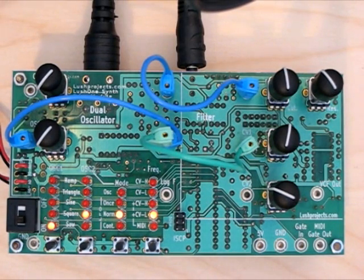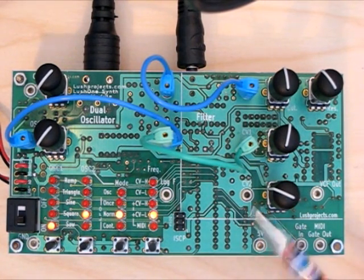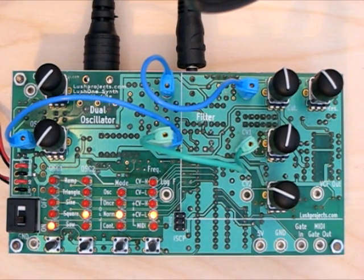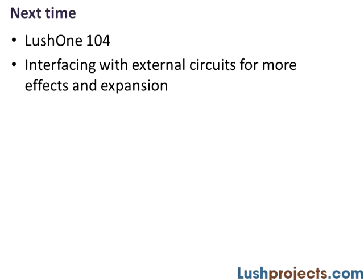We've been through all the key features of the Lush One — using the control voltage inputs and the associated gain controls to modulate the filter, using the log F output from oscillator 1 as an input to the filter to make it track the keyboard, and using the control voltage inputs to the oscillators and their associated gain controls to modulate the oscillators. You're now equipped to create a really massive range of sounds from this very simple circuit. Experiment and see how it works. There's one more module that follows this, where we'll talk about how you can bring external circuits into the Lush One and use it not just with MIDI inputs but with other types of control as well.